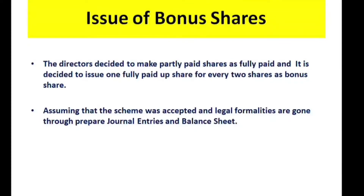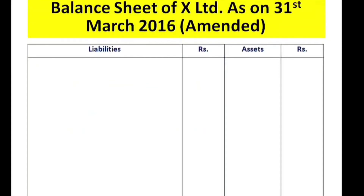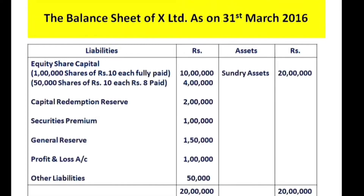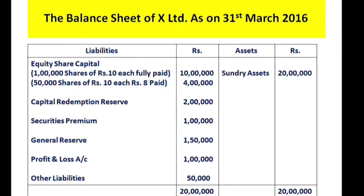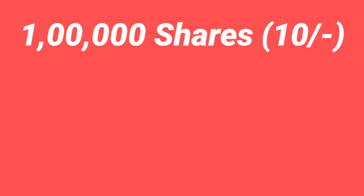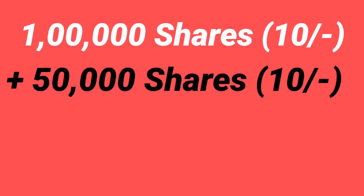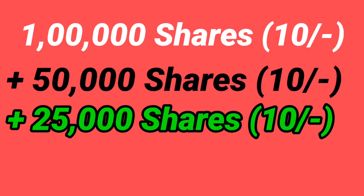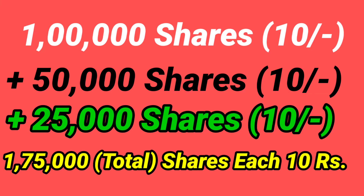Here are the journal entries and the new balance sheet of X Limited as on 31st March 2016. For equity share capital: originally 1,00,000 fully paid shares plus 50,000 partly paid shares (now made fully paid), plus 25,000 new bonus shares issued. Total equity shares are now 1,75,000 shares.